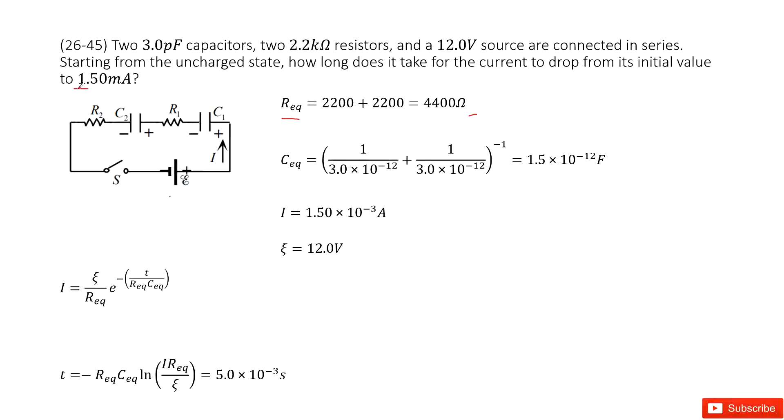So how can we do that? We can see we have the function, the current changes with the time, look like this one. 1 over RC, or R times C is the time constant.